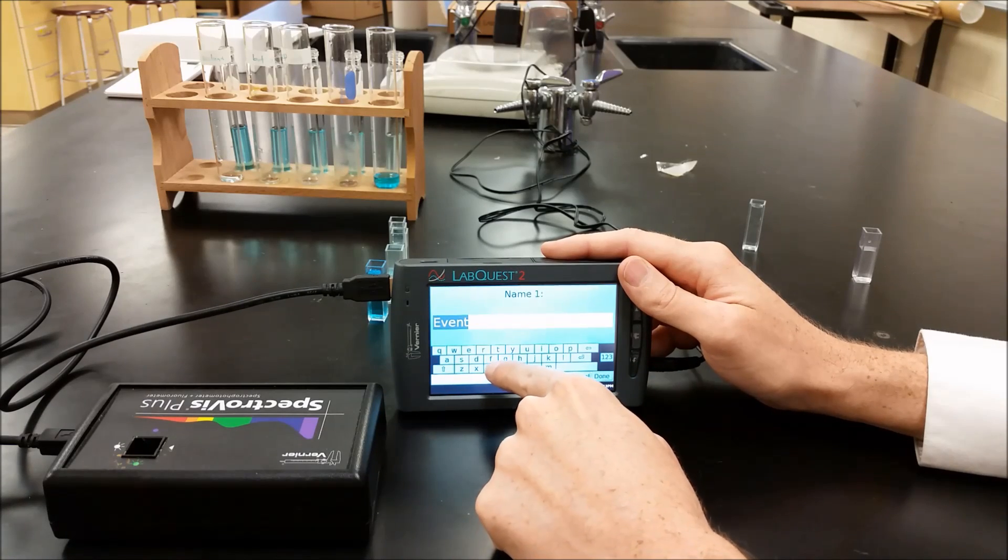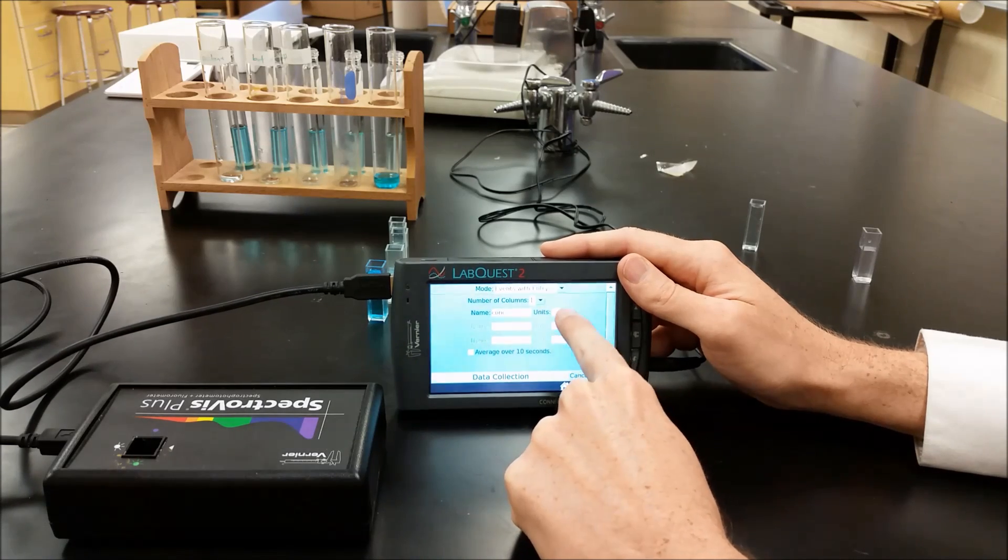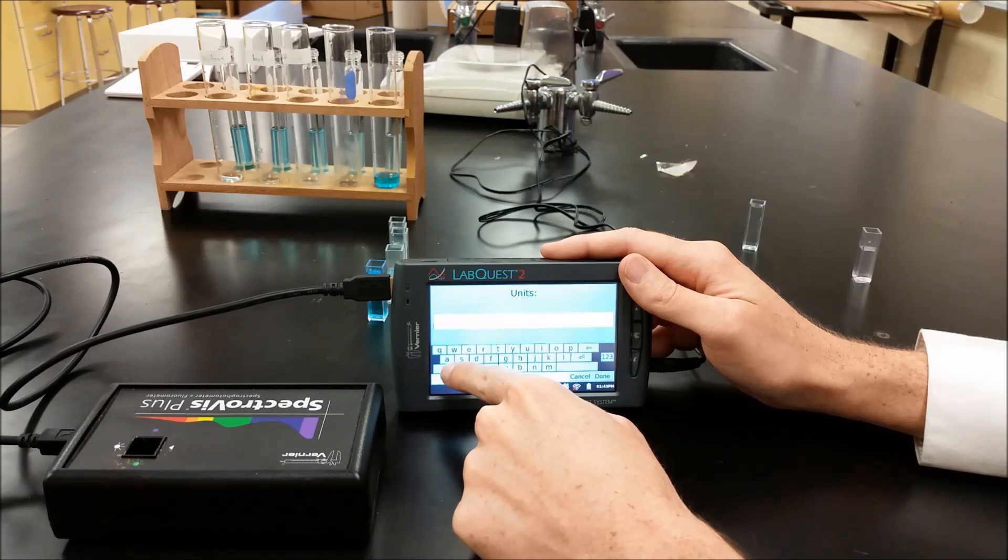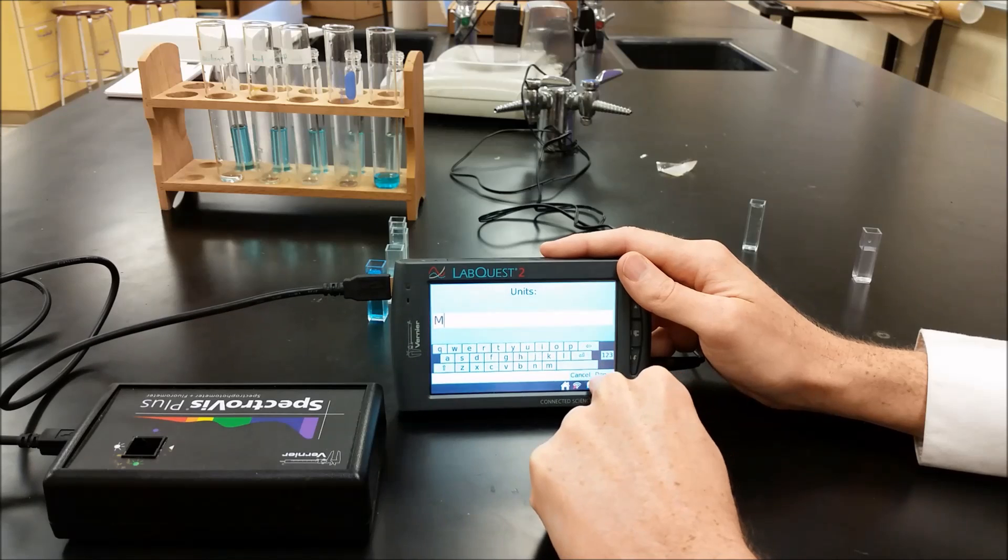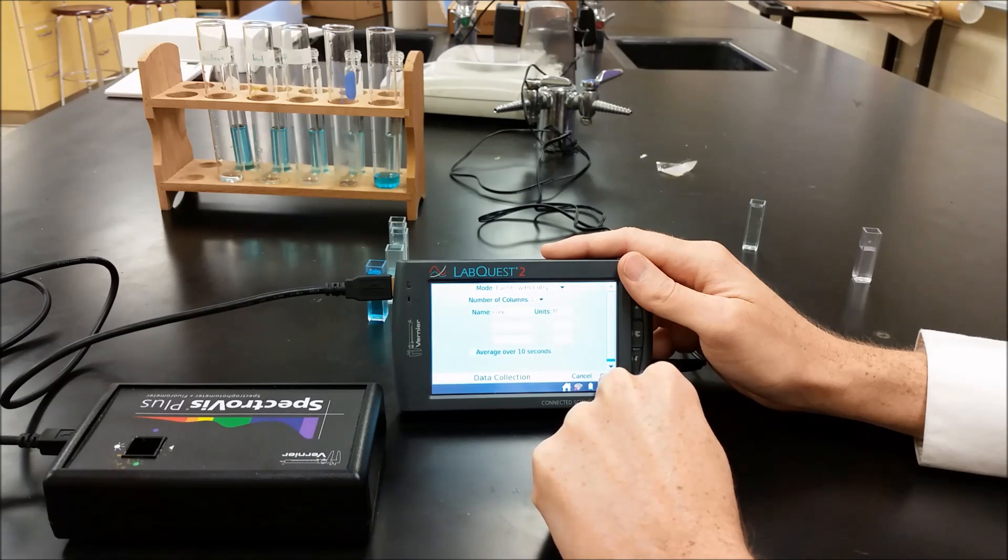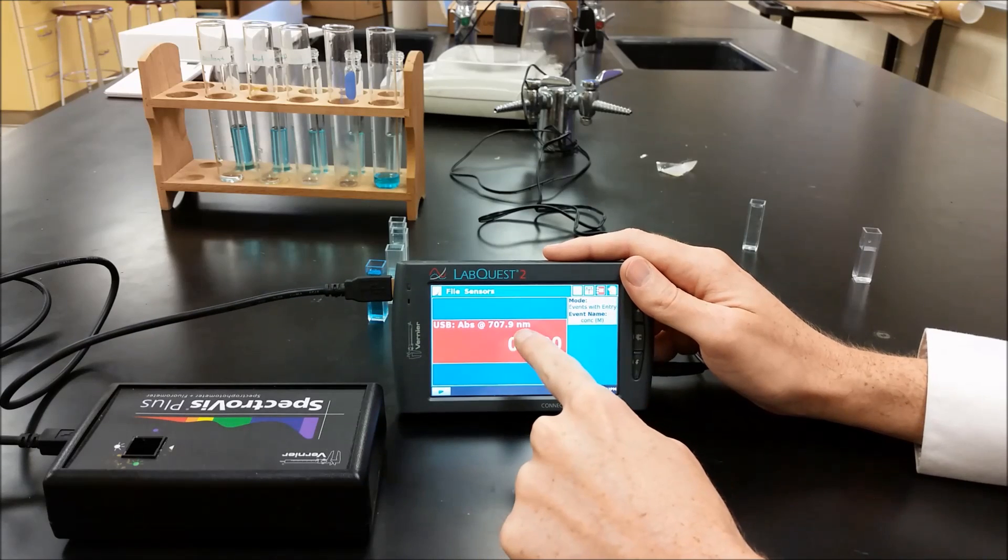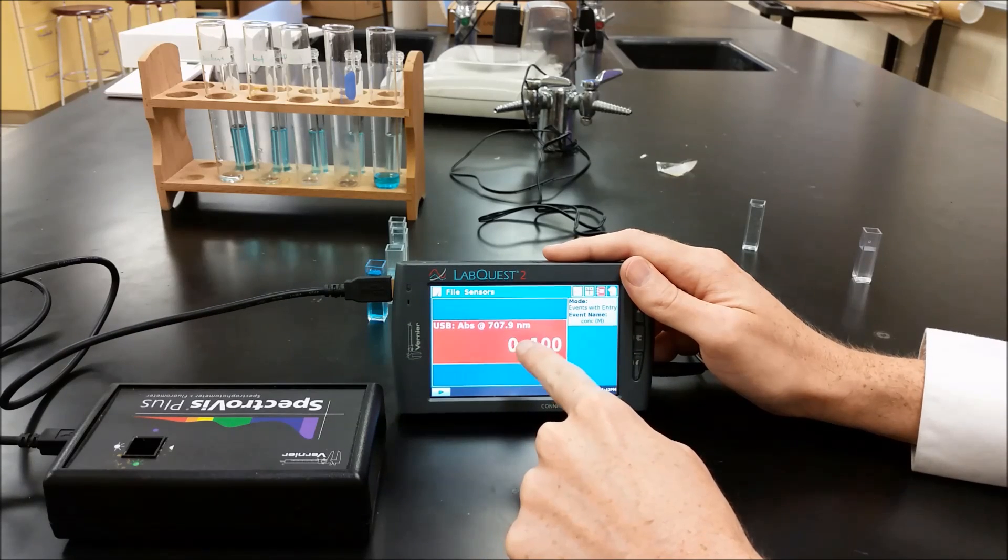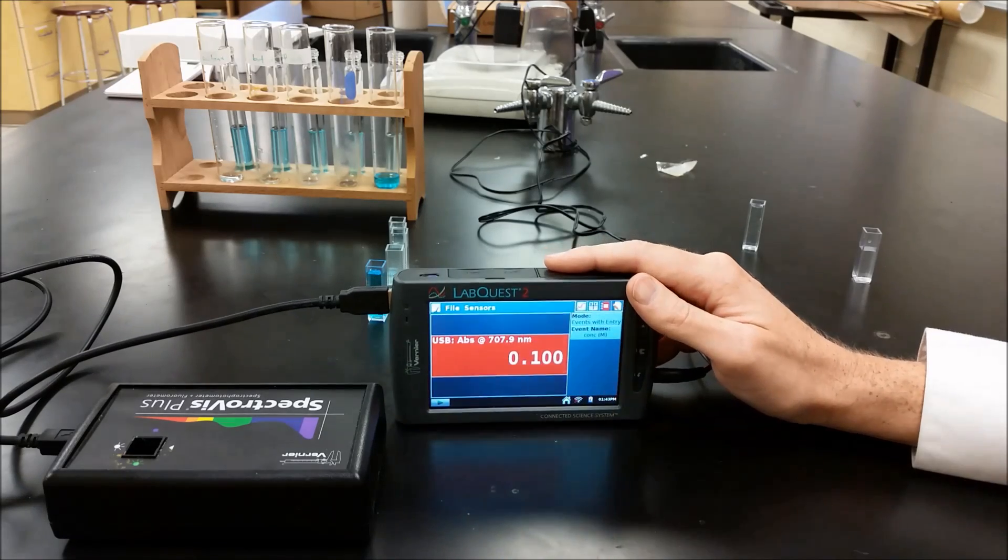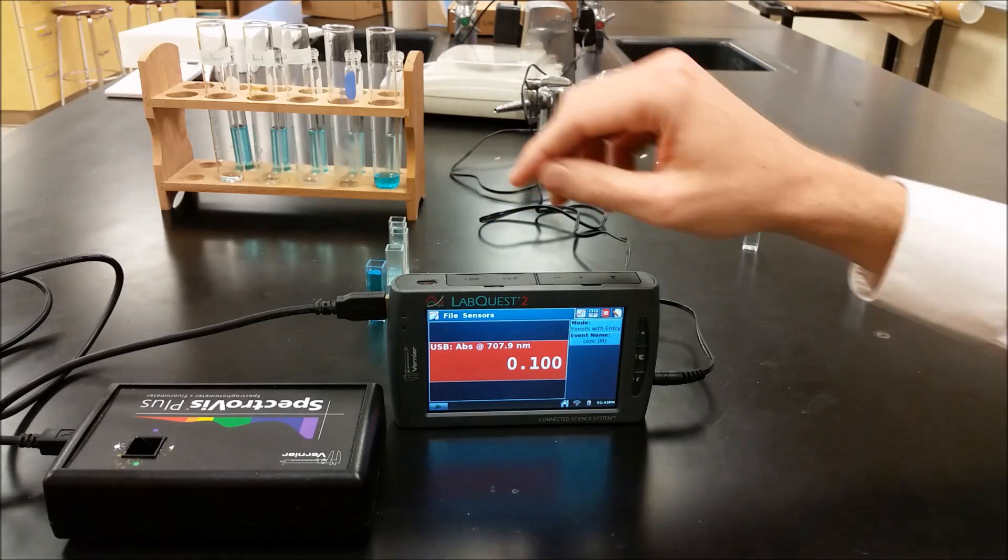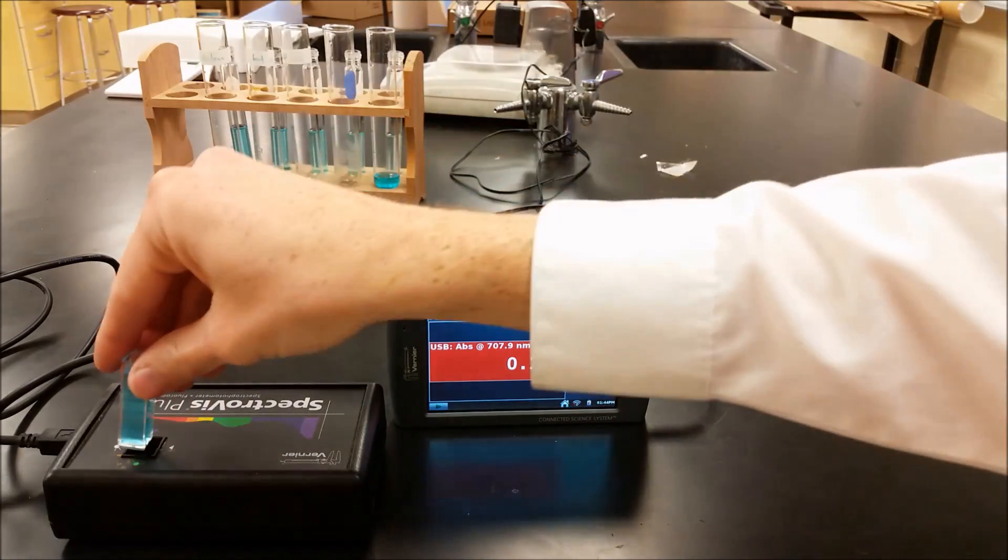And we're going to type in the concentration. And then for our units we can go with molarity. Discard our old data. Now it's got it currently at 708 nanometers which is fine. A little into the infrared range. And every time we put in our solution now it's going to give us the absorbance. So I'm going to take our 0.5 molar put that in there.